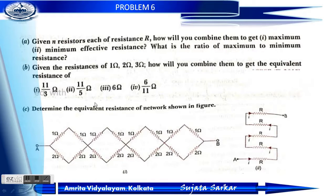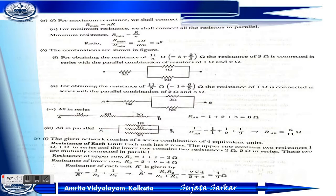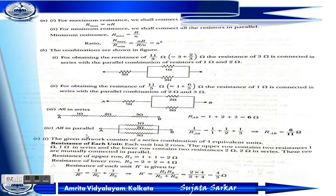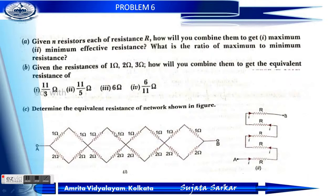For the equivalent resistance of the network shown in the figure: the upper row has 1 plus 1 equals 2 ohm in series, and the lower row has 2 plus 2 equals 4 ohm in series. These two branches are connected in parallel. Using 1 by R_dash equals 1 by R1 plus 1 by R2, we get R_dash equals 4/3 ohm.